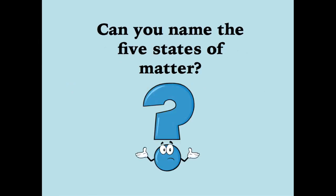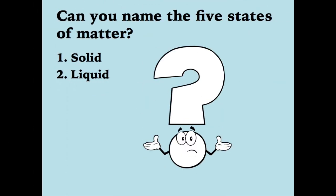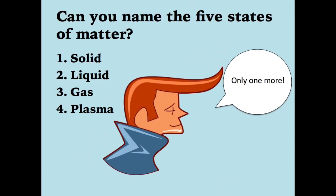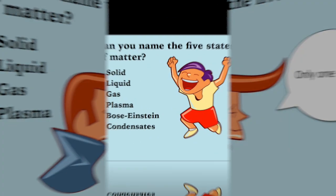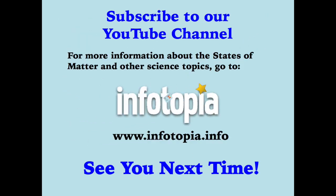The energy levels range from low to high, starting with BEC and ending with plasma. Quiz yourself — can you name the five states of matter? Solid, Liquid, Gas, Plasma, Bose-Einstein Condensates.